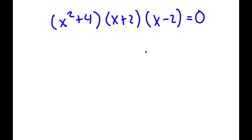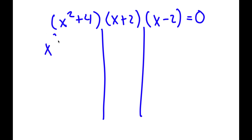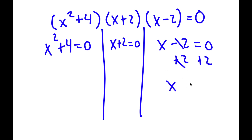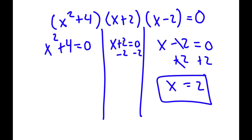This gives me three equations to work with: x squared plus 4 equals 0, x plus 2 equals 0, and x minus 2 equals 0. Starting with the easier ones — if x minus 2 equals 0, I add 2 on both sides and get x equals 2. If x plus 2 equals 0, I subtract 2 on both sides and get x equals negative 2. So I have two solutions already.